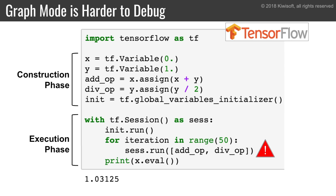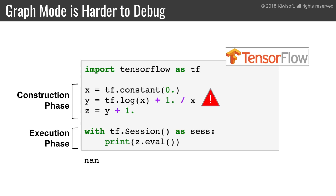For example, suppose you try to evaluate both the addition and the division operations in the same call to session.run. Then the result becomes unpredictable. This is because TensorFlow does not see any dependency between these operations, so it runs them in parallel, and the order is not guaranteed. This is easy to fix, but it can be hard to catch.